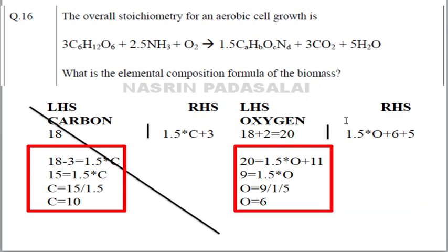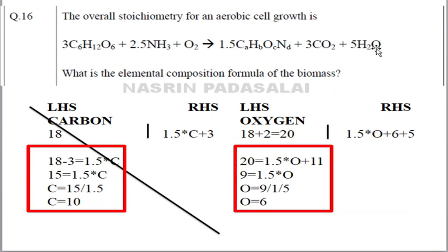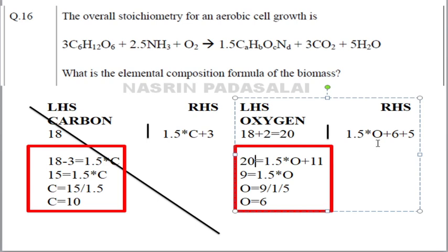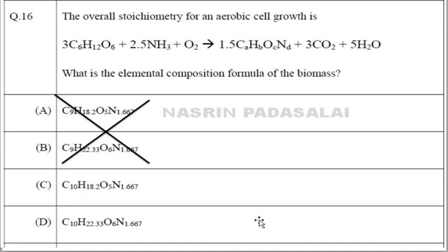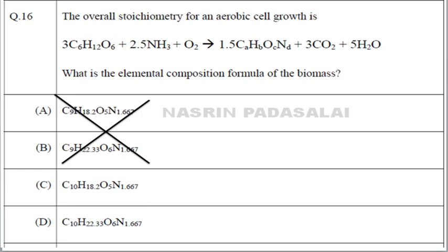On the right-hand side: 1.5×o from biomass, plus 6 oxygens from CO₂, plus 1 oxygen from water (×5), giving 6 + 5 = 11. Equating: 20 = 11 + 1.5o, so 9 = 1.5o, therefore o = 9/1.5 = 6. The correct option is D: C₁₀H₂₀O₆N₁.₆₇. You can verify hydrogen the same way, but it's not necessary once we identify the answer.